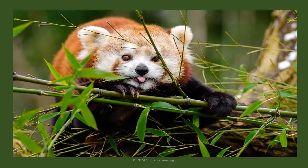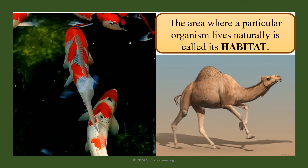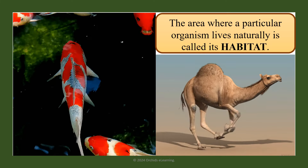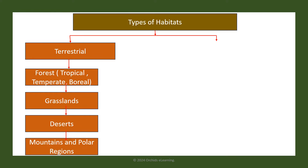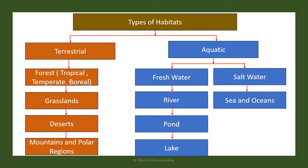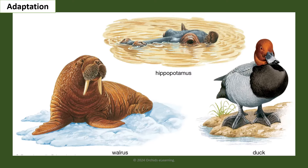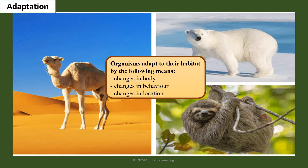The area where a particular organism lives naturally is called its habitat. The five major habitats are forests, grasslands, deserts, mountains and polar regions, and aquatic habitat. Changes in the structure or behavior of an organism which allow it to survive in a particular habitat are called adaptations. Organisms adapt to their habitat by changes in body, changes in behavior, and changes in location.